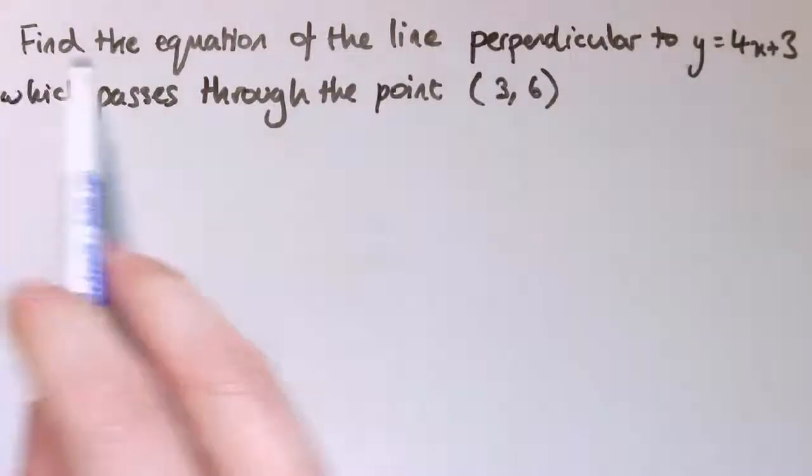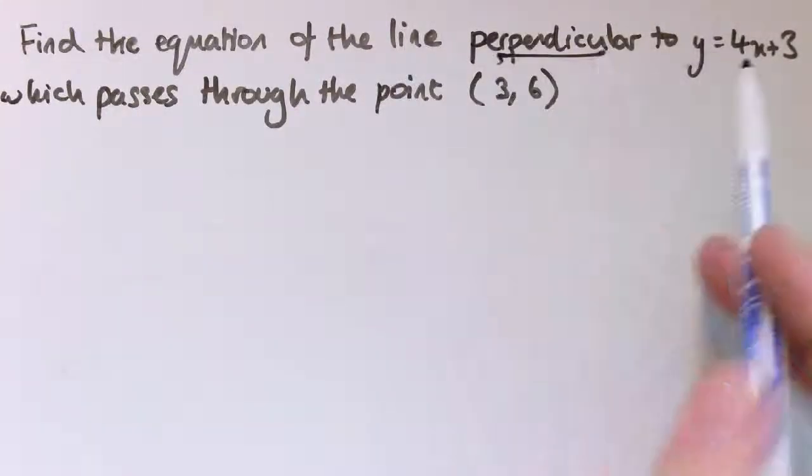Here's another question. Find the equation of the line perpendicular to y equals 4x plus 3, which passes through the point (3,6). So here we are in the form y equals mx plus c, so we've got gradient 4 and y-intercept 3.